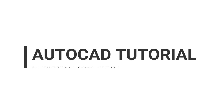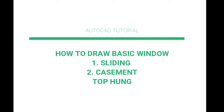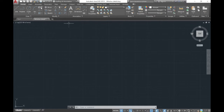Hello everyone, this is Christian Architect. Welcome back to my channel. If you are new to my channel, please don't forget to subscribe and enjoy my video. In today's video we're going to discuss three fundamental windows that are commonly used in the industry: the first is the sliding window, the second is a casement window, and the third is the top hung window. Let's get started.